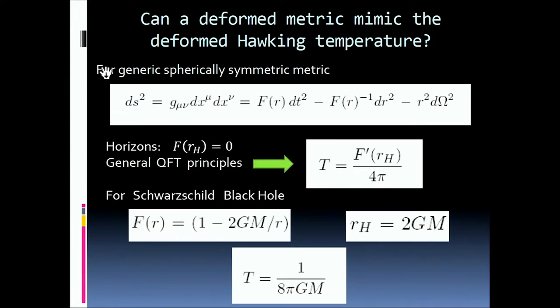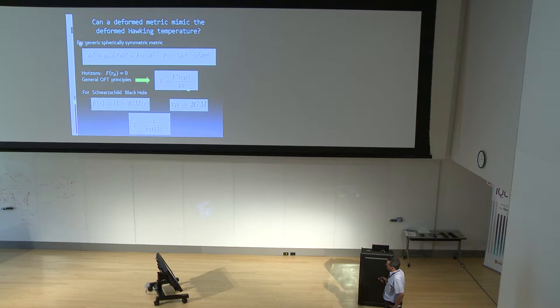Well, for a generic spherically symmetric metric like this, we know that you can compute the temperature of the horizon using this expression. In particular, if F is the Schwarzschild metric, then you get the Hawking formula.